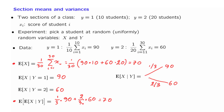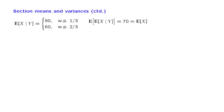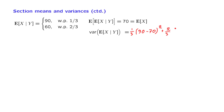It's a divide and conquer method, similar to what we have been doing when we use the total expectation theorem. We continue with our example. The conditional expectation is a random variable that takes these two values with certain probabilities, and the mean of this random variable is equal to 70. Let us now calculate the variance of this random variable. With probability 1 third it takes a value of 90, which is this much away from the mean, squared. And with probability 2 thirds it takes a value of 60, which is this much away from the mean, squared. Carrying out the calculation, we find that this number is equal to 200.